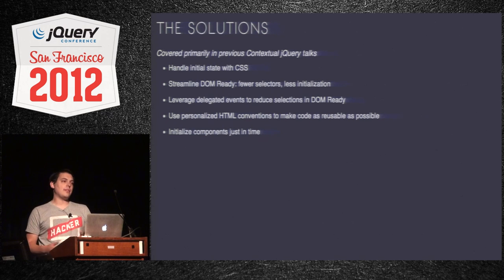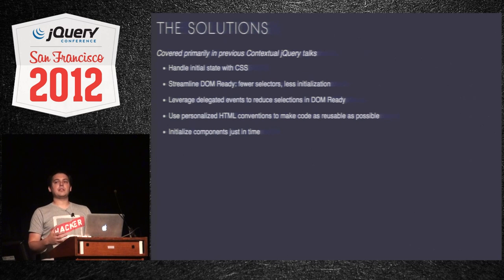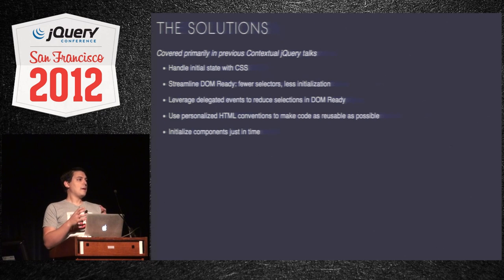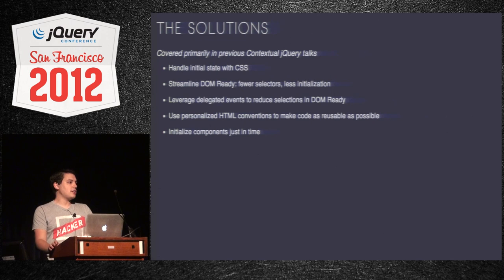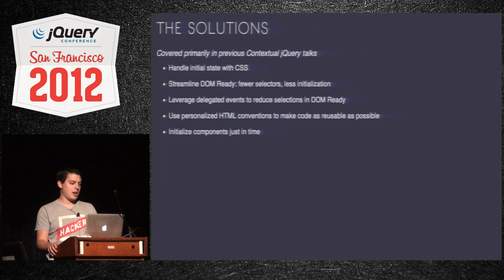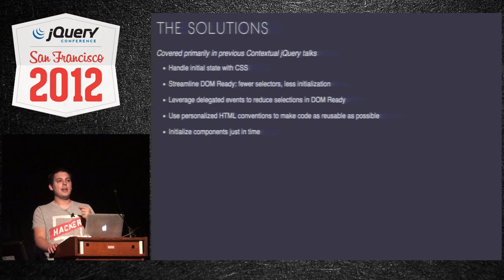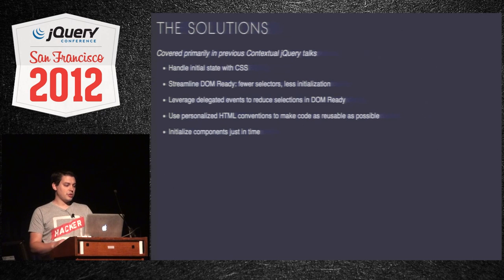Part of contextual jQuery is coming up with your own HTML conventions that you'll follow throughout your website — they can change from project to project, but you'll follow them consistently so you can make highly reusable code. Finally, instead of thinking of the page as a massive blob you have to get ready all at once, focus on individual components, how a user might interact with those, and what would be triggers indicating they're planning to do something so you can make sure it's ready. You can even start loading stuff ahead of time before they request it to speed up perceived page speed.